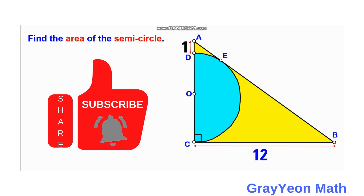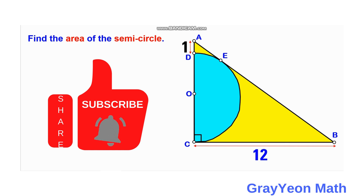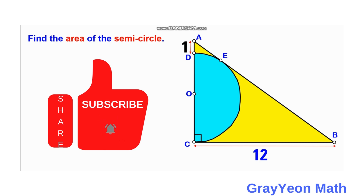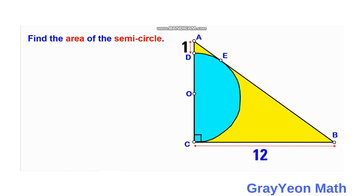Welcome to GrayonMath, where we solve this problem. We have a right triangle ABC, and inside this right triangle is a semicircle centered at O. This semicircle is tangent to the hypotenuse AB at point E. The distance from the topmost point of the diameter of the semicircle to the top of the right triangle is 1, and the longer leg of this right triangle is 12 units. We are required to find the area of the semicircle.